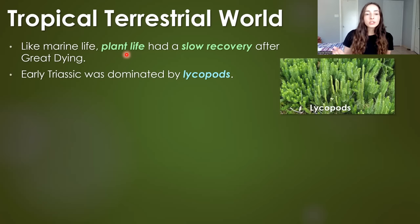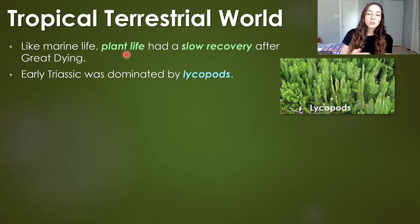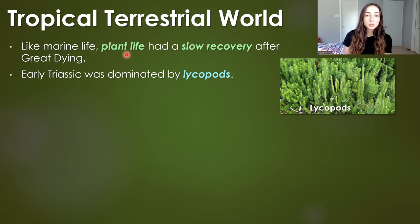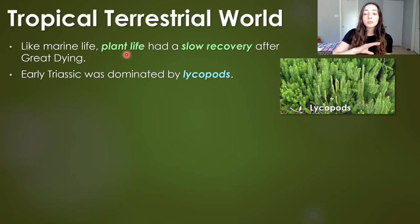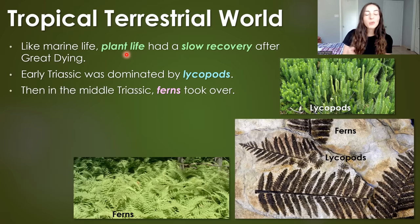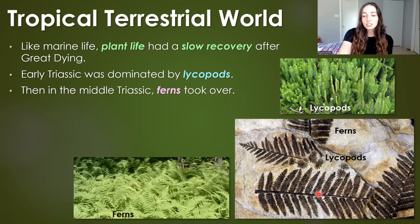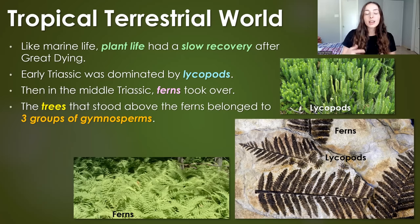The early Triassic was dominated by lycopods. We had low diversity because things were still recovering after a major extinction. Then in the Middle Triassic, ferns took over. We can see fossilized ferns and lycopods both in the picture at the bottom right.